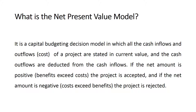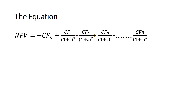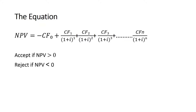The net present value equation has the cash outflow — the cost of the project — stated as a negative number, and then we add to it the cash inflows discounted to present value. We accept the project if the net present value is greater than zero, and we reject the project if the net present value is less than zero.